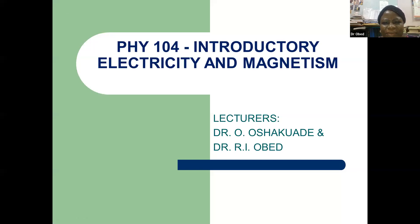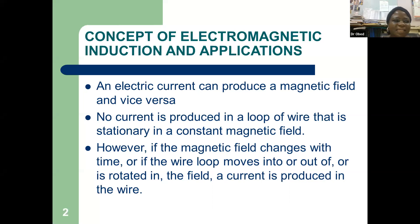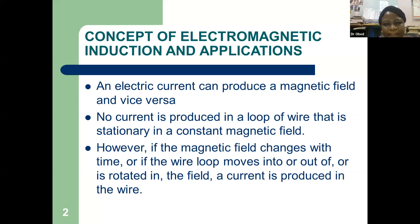I'll be sharing my screen. The title is: Concept of Electromagnetic Induction and Applications. As you may have been taught, an electric current can produce a magnetic field, and if the conditions are right, a magnetic field can also produce electric currents. No current is produced in a loop of wire that is stationary in a constant magnetic field. However, if the magnetic field changes with time, or if the wire loop moves into, out of, or is rotated in the field, a current is produced in the wire.